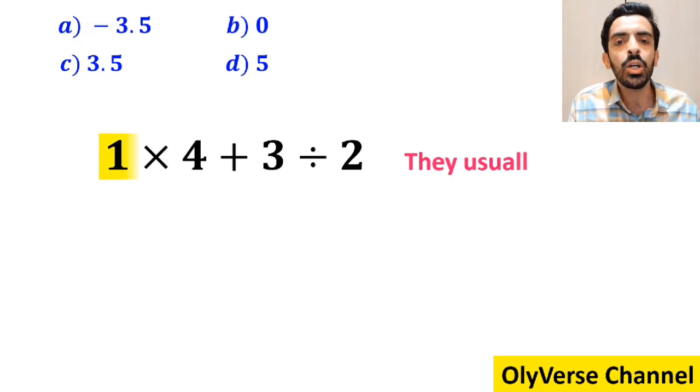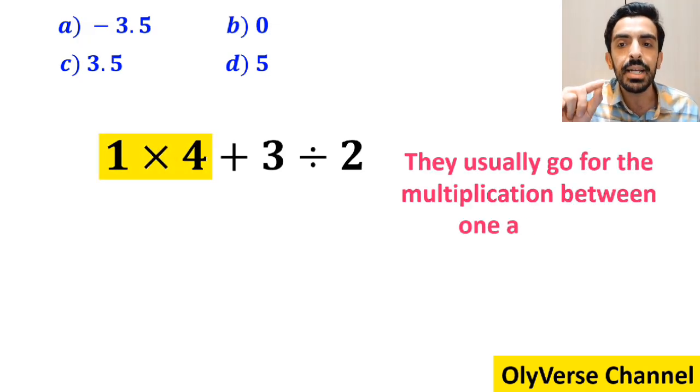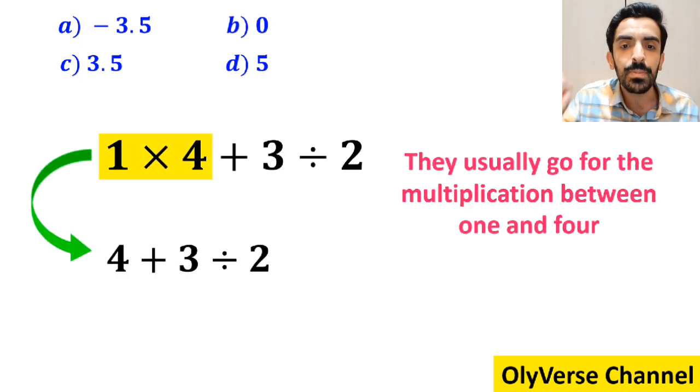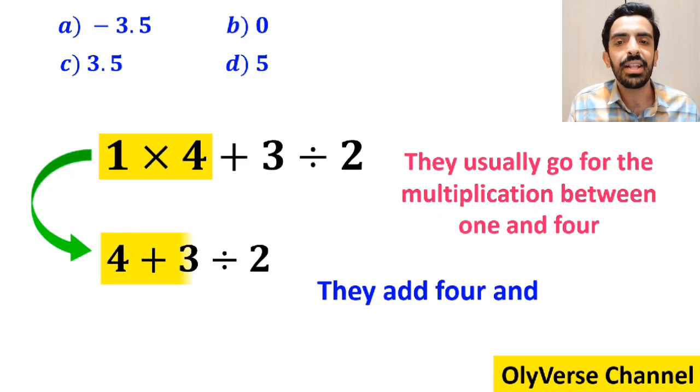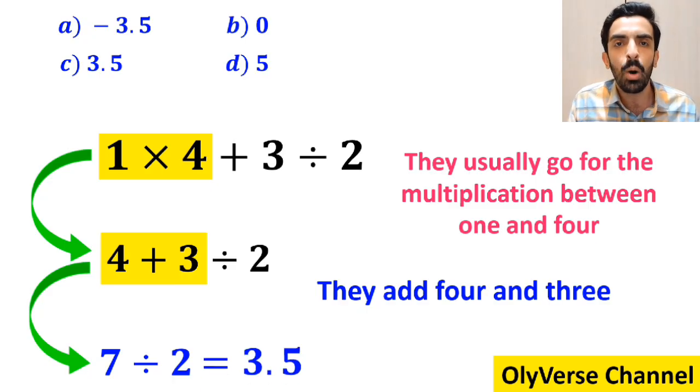In the next step, they usually go for the multiplication between 1 and 4, and replace this expression with 4 plus 3 divided by 2. Then they add 4 and 3, and rewrite this expression as 7 divided by 2, which finally gives them the answer 3.5.